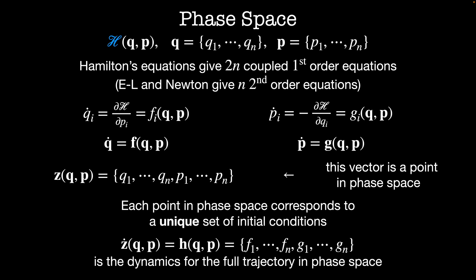So in phase space, the rate of change of Z is given by some vector function H, which is a function of the Q's and the P's, which is obtained by stringing together all of the F's and all of the G's. And this gives us the full dynamics of the trajectory in phase space.